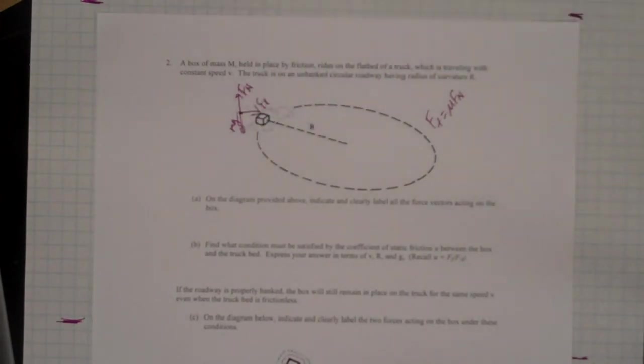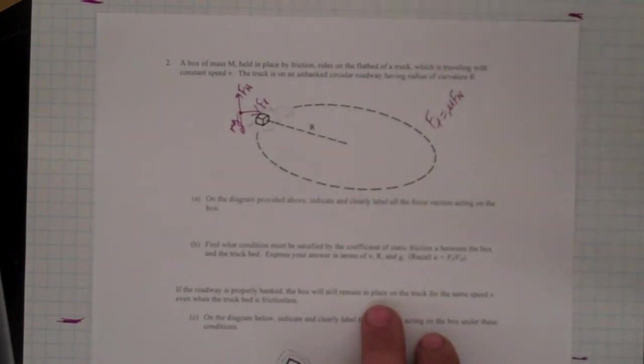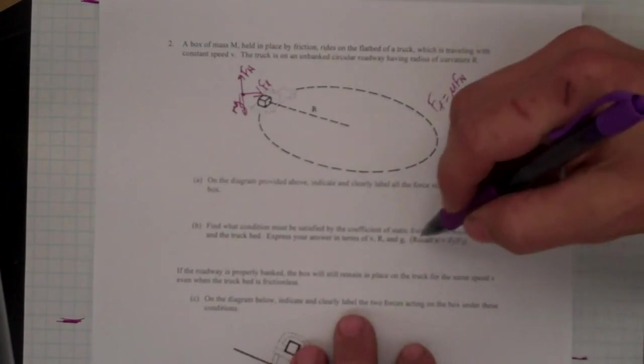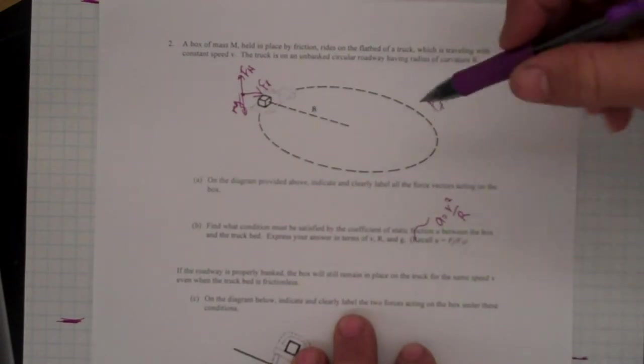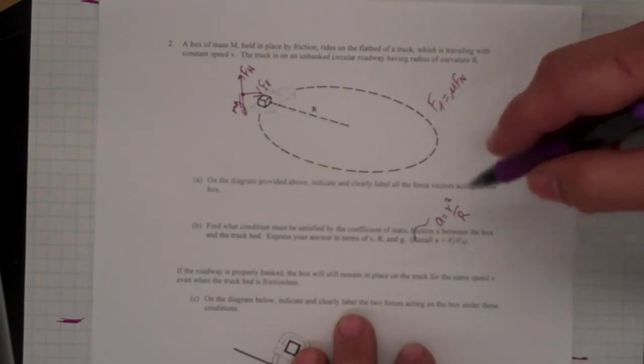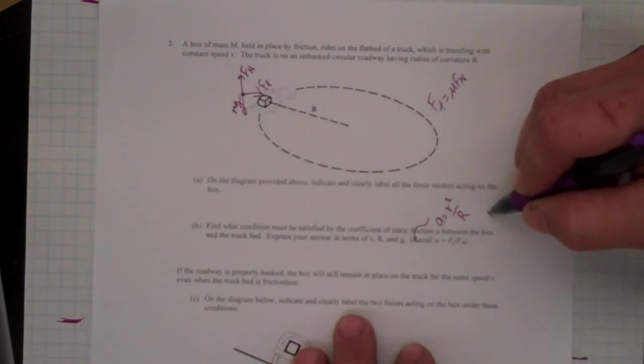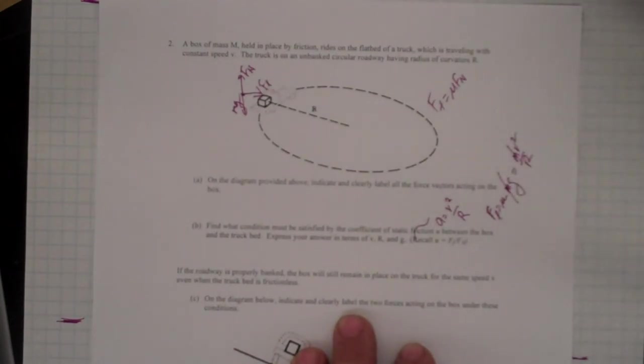So on the diagram provided above, indicating clearly label all the force vectors acting on the box. For what condition must be satisfied for the coefficient of friction, a key idea there is just that the inward-directed acceleration is v squared over r. And therefore, if I want to figure out the relationship between the static friction and the velocity, then what I can say is that the inward-directed force is the force of friction, which is mu, in this case Mg. And that's going to equal mv squared over r. The m's cancel out, and you get a relationship.